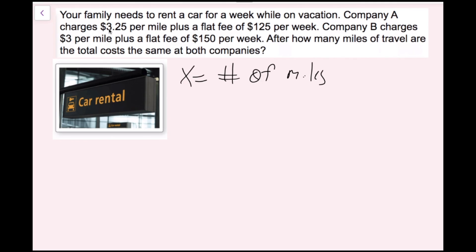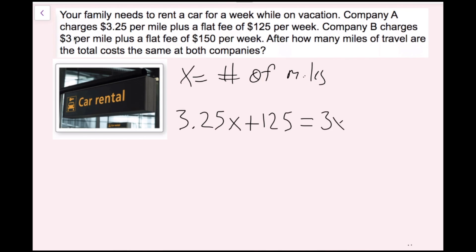Company A's total cost is 3.25 times x miles plus the flat fee of $125, giving 3.25x plus 125. I set this equal to Company B's cost: 3 per mile times x, plus the flat fee of $150, giving 3x plus 150. So the equation is: 3.25x plus 125 equals 3x plus 150.